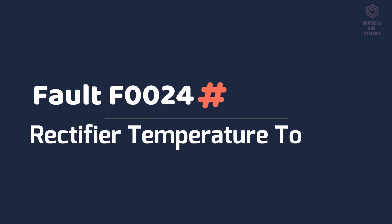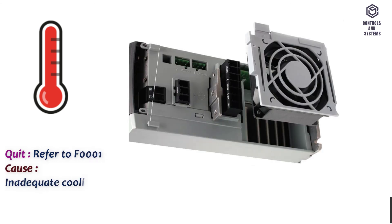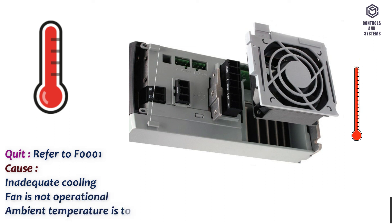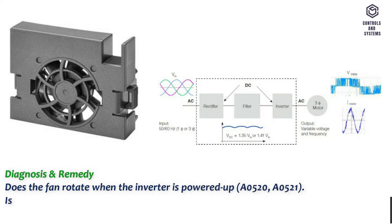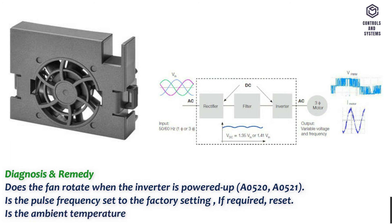Fault F0024 rectifier temperature too high. Quit: refer to F0001. Cause: inadequate cooling, fan is not operational, ambient temperature is too high. Diagnosis and remedy: Does the fan rotate when the inverter is powered up A0520, A0521? Is the pulse frequency set to the factory setting, if required reset? Is the ambient temperature within the permissible limits A0520, A0521?